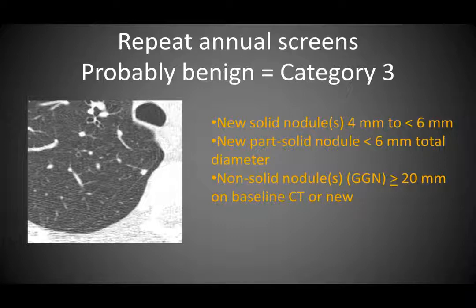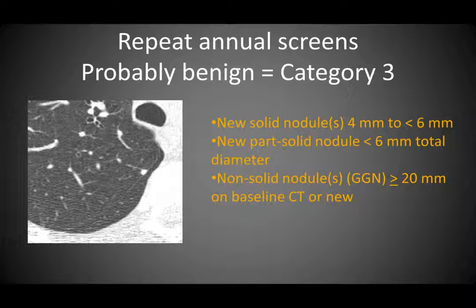For repeat annual screens, the size thresholds change. A new solid nodule uses a size threshold of 4 mm rather than 6 mm for baseline. A new part-solid nodule less than 6 mm total diameter is category 3. A non-solid nodule larger than 20 mm, either at baseline or new on repeat screen, is category 3. All category 3 findings: recommend return in 6 months for a repeat low-dose CT.